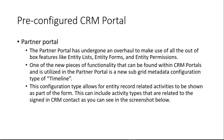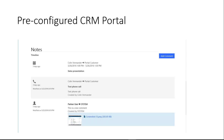One of the new pieces of functionality that CRM portals has introduced and is being utilized in the partner portal is a new subgrid called the timeline. In a partner portal, various partners can share a particular opportunity. When one partner updates something on the opportunity, the other partner gets notified from the timeline grid that partner A has made changes. We can see how the timeline feature looks in action — a single opportunity has been updated by other partners, and all activities are tracked on the entity form itself.